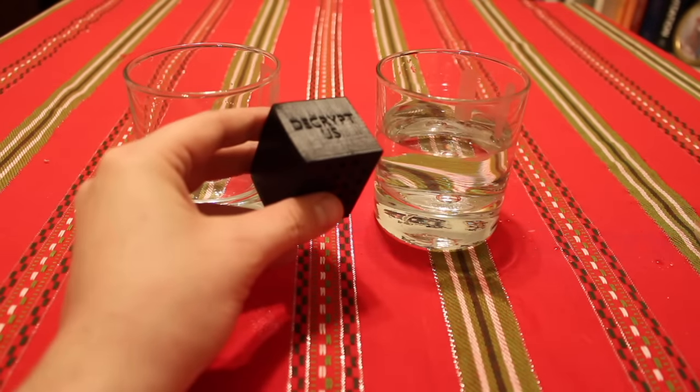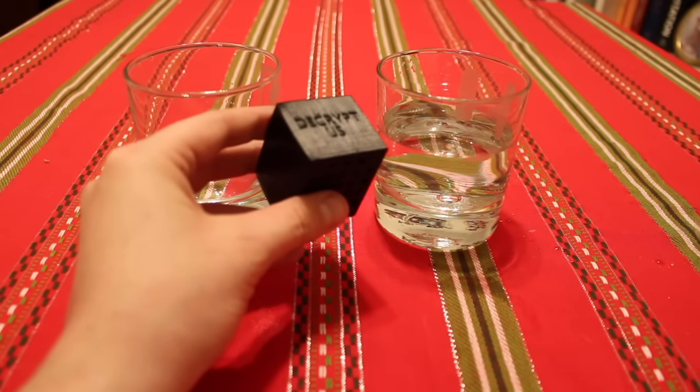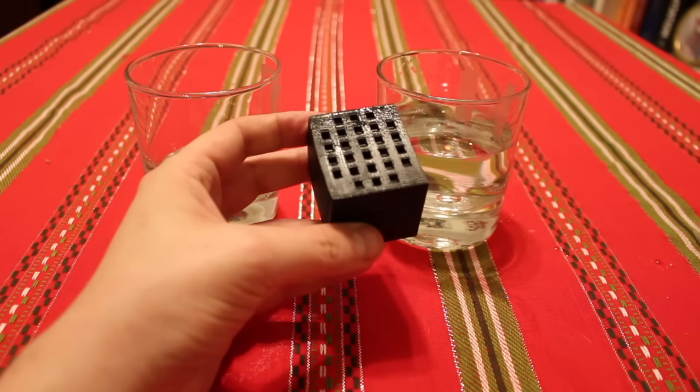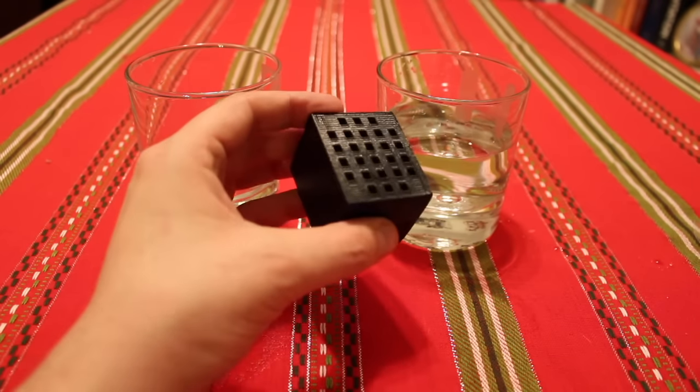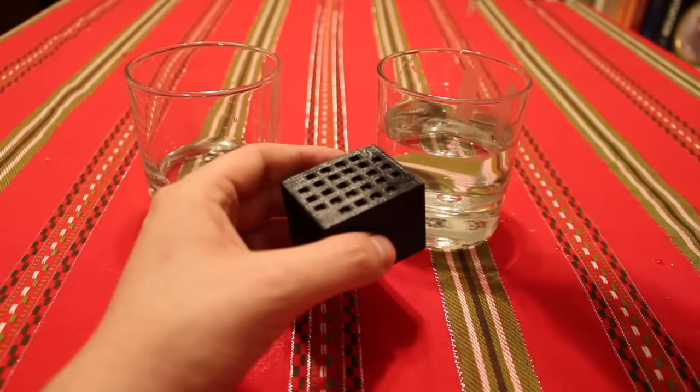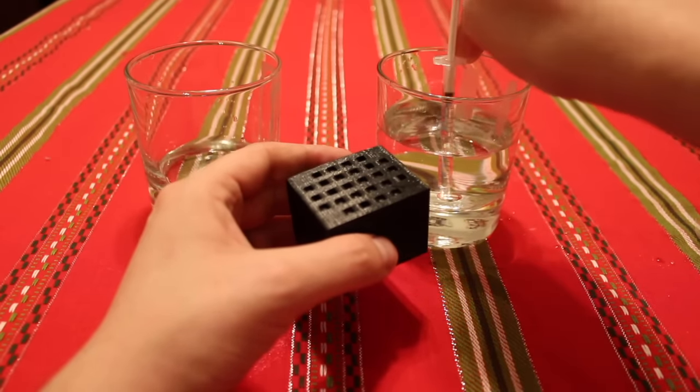The solution involves three components. First, the decryptus on the cube. Second, the fact that there are 26 holes on the top and the bottom. And third, that you can match holes to one another by pouring water through the cube.